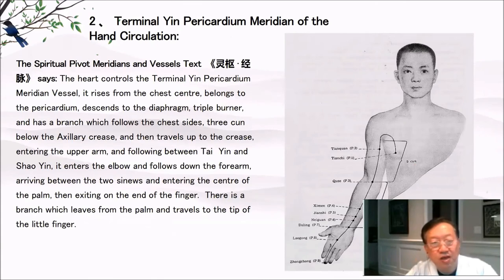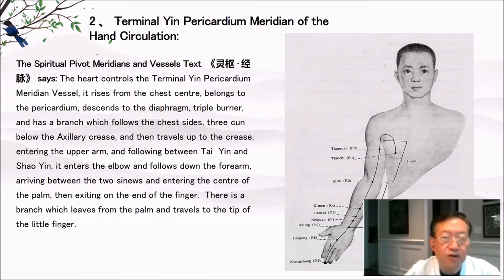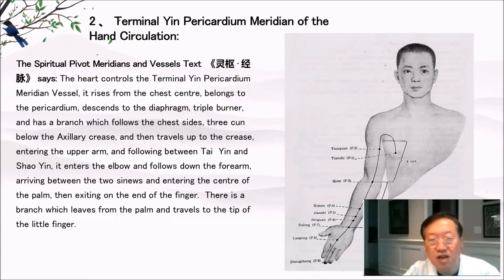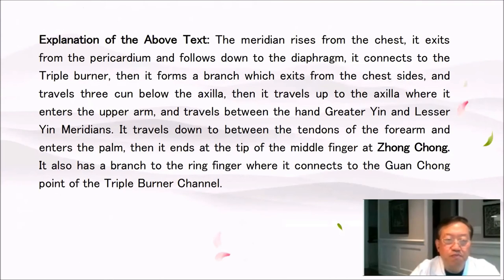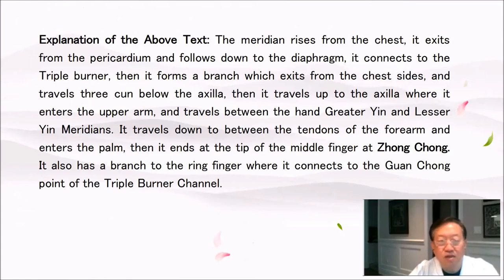Terminal yin pericardium meridian of the hand, circulation. The Spiritual Pivot says: the heart controls the terminal yin pericardium meridian vessel. It rises from the chest center, belongs to the pericardium, and descends to the diaphragm and triple burner. A branch follows the chest sides three cun below the axillary crease, then travels up to the crease, entering the upper arm between tai yin and xiao yin. It enters the elbow, follows down the forearm, arriving between the two sinews and entering the center of the palm, then exiting on the end of the finger. A branch leaves from the palm and travels to the tip of the little finger. Explanation: the meridian rises from the chest, exits the pericardium, follows down to the diaphragm, connects to the triple burner, branches from the chest sides three cun below the axilla, travels up to the axilla, enters the upper arm between the hand greater yin and lesser yin meridians, travels down between the tendons of the forearm, enters the palm, and ends at the tip of the middle finger at chong chong. It also has a branch to the ring finger connecting with the guan chong point of the triple burner channel.